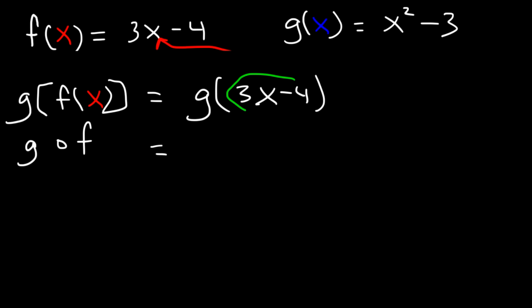So we're going to take this x and plug it in here. So instead of x squared minus 3, it's 3x minus 4 squared minus 3.